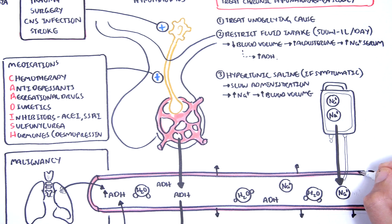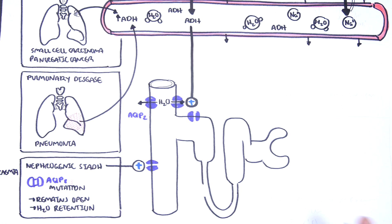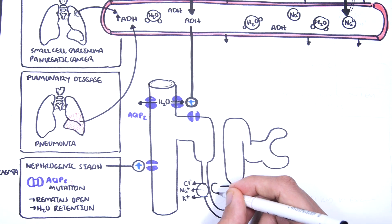Furosemide can also be given with patients who have features of mild fluid overload. Furosemide works at the ascending loop of Henle, inhibiting a triporter.